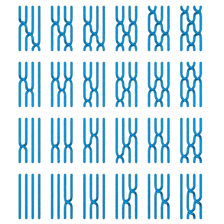The idea is that braids can be organized into groups, in which the group operation is: do the first braid on a set of strings, and then follow it with a second on the twisted strings. Such groups may be described by explicit presentations, as was shown by Émile Artin.